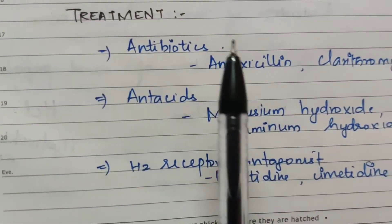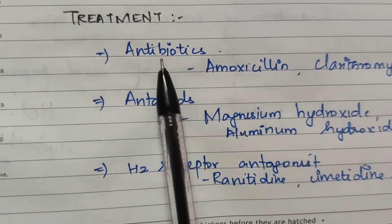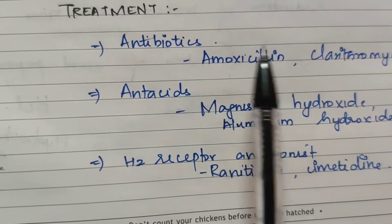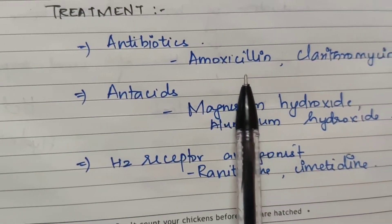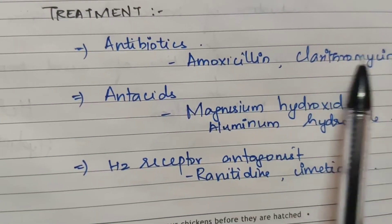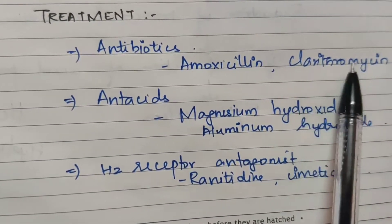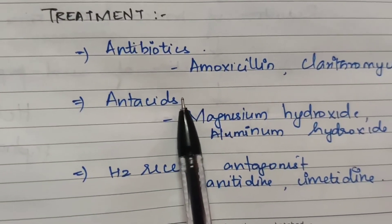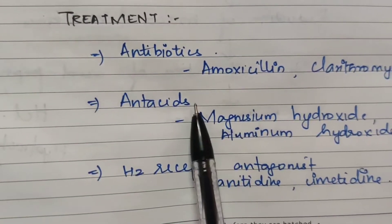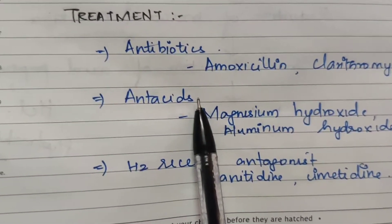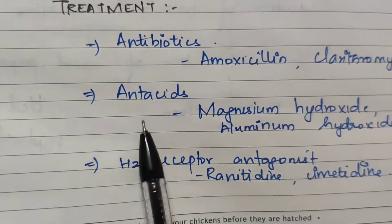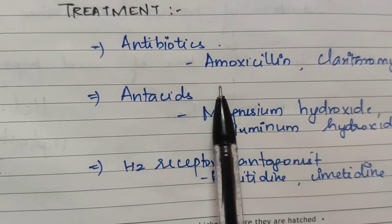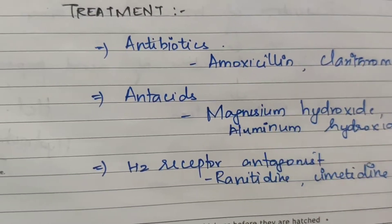Treatment targets the cause. Antibiotics such as amoxicillin and clarithromycin are used. Antacids reduce the action of pepsin and hydrochloric acid.